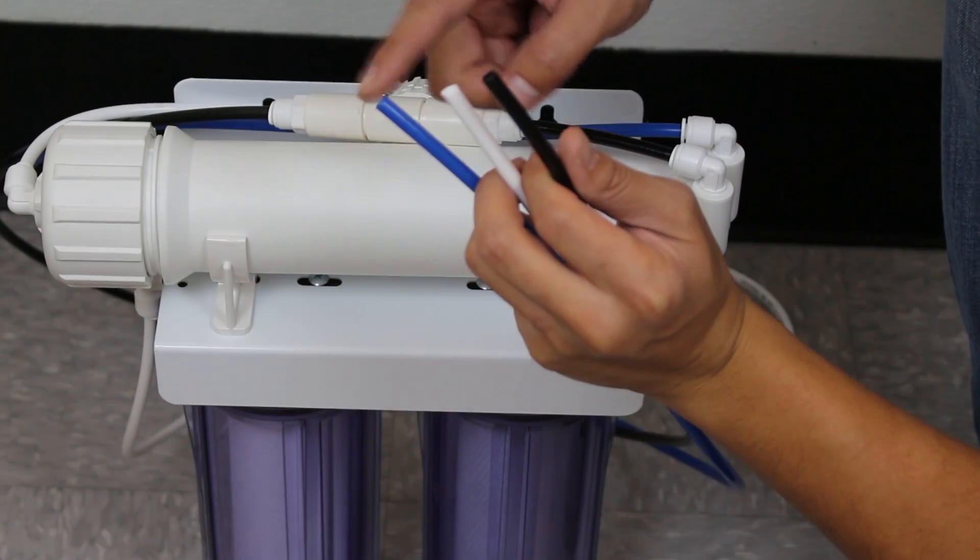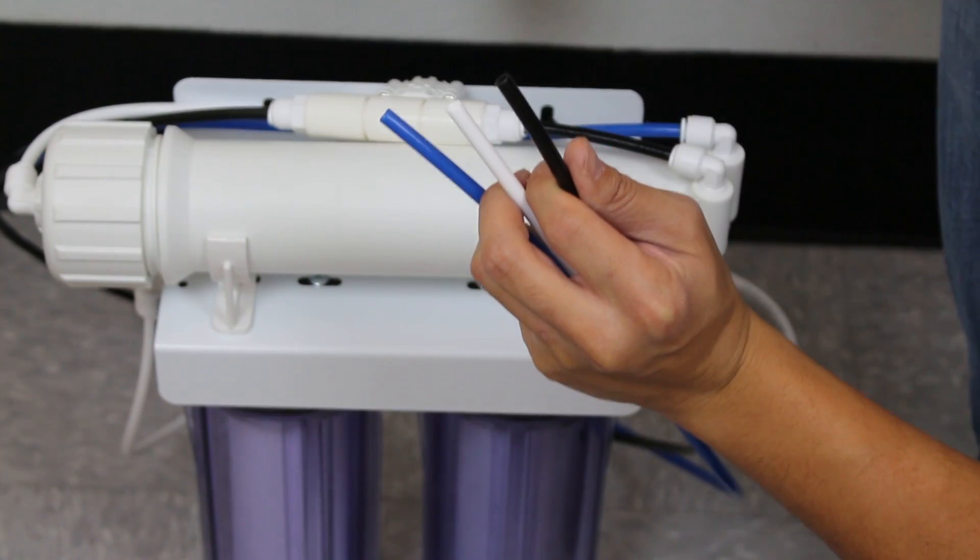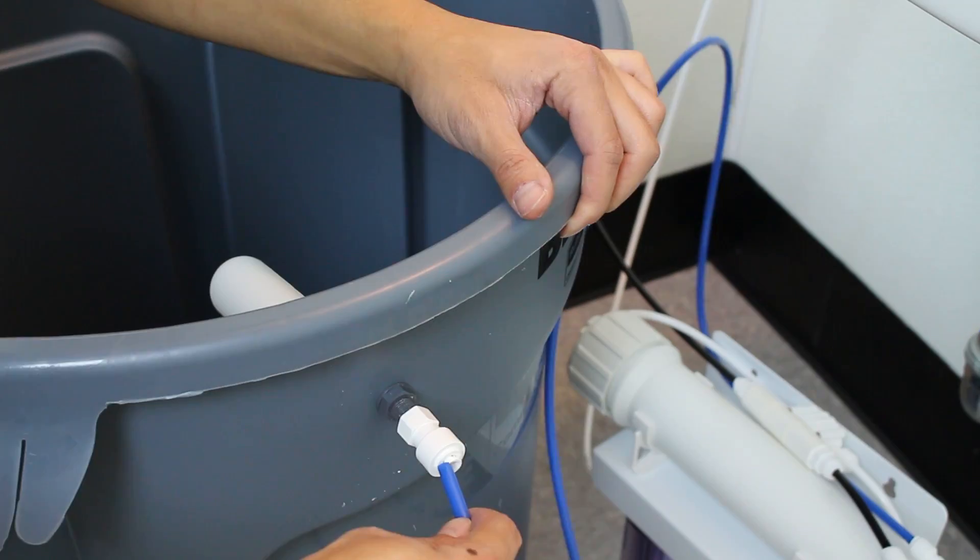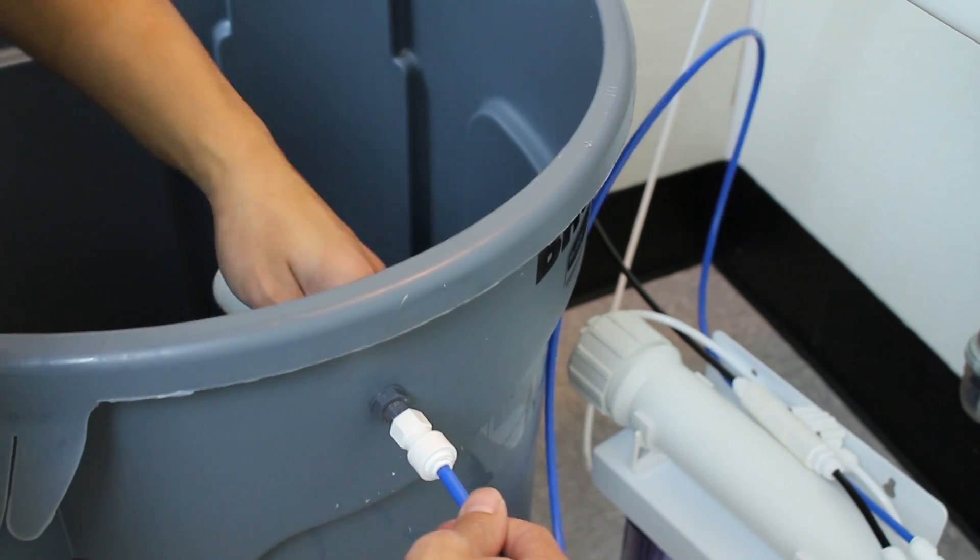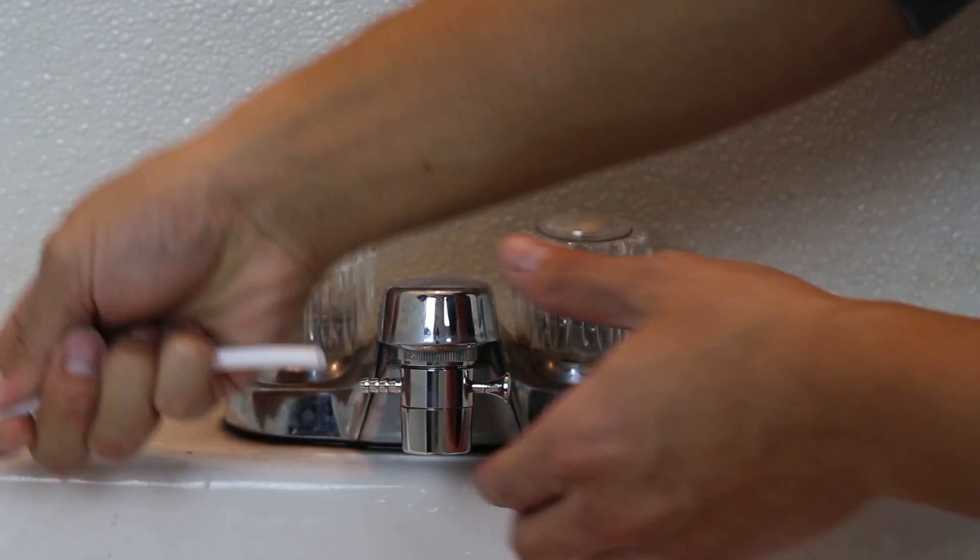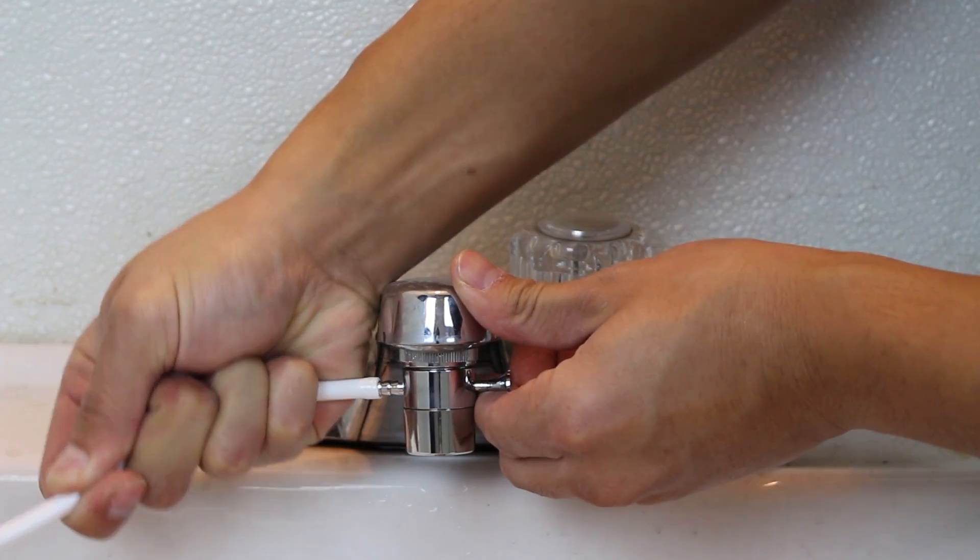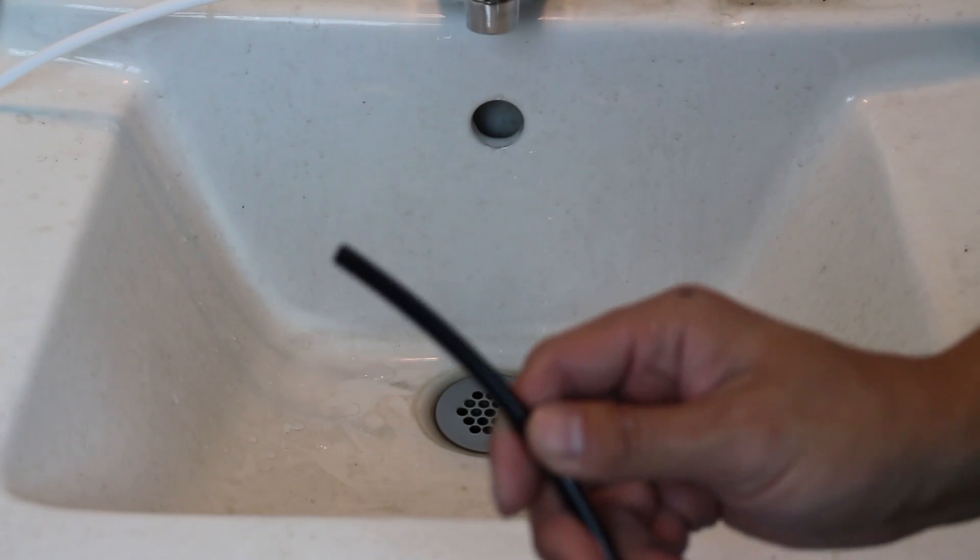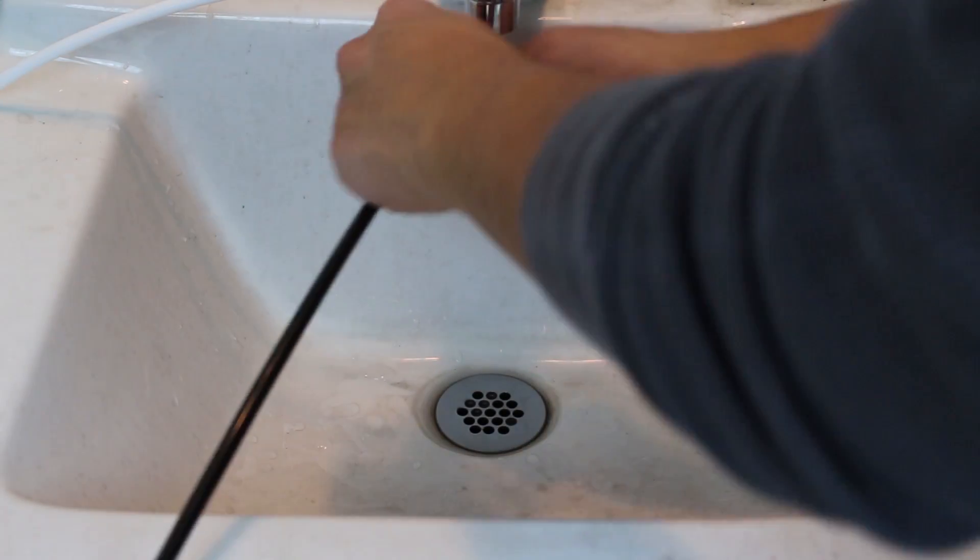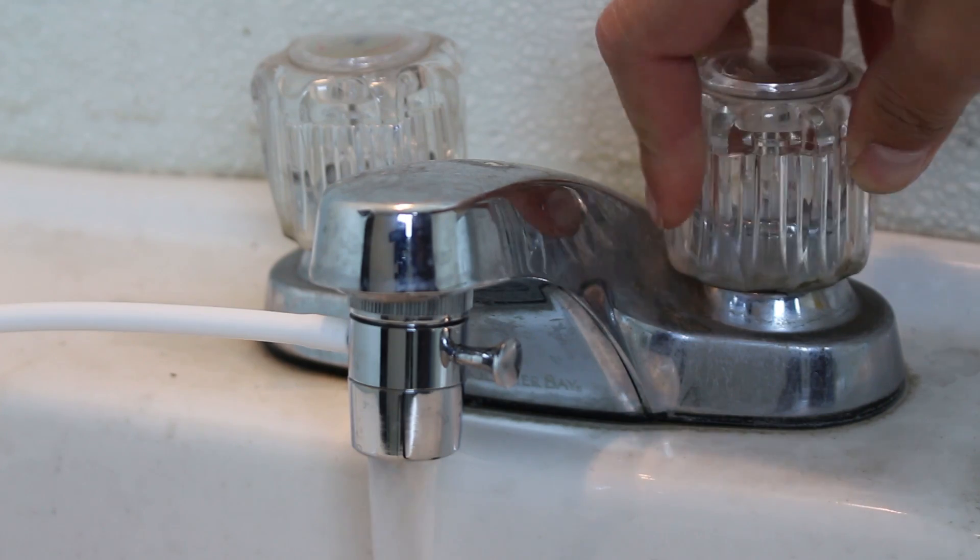Great! Your reverse osmosis filter should come with three colored hoses. Take the blue hose and insert it into the end of your floating valve. Next, take your white hose and plug it into the faucet diverter. This is your input line. And with the black hose, insert it into the drain. Your filtration system is now fully functional.